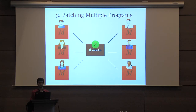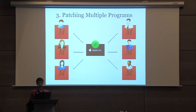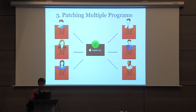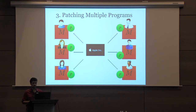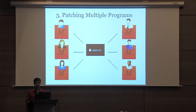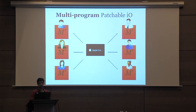The third issue is patching multiple programs. Suppose Apple issues personalized software to all its users, where each user has a tailor-made copy. Apple wants to publish a single patch that can update all the individualized software. Apple issues one encoded patch on a bulletin board, and all users apply it to their copies to obtain an obfuscation of their individualized updated software. This notion is what we call multiprogram patchable IO.